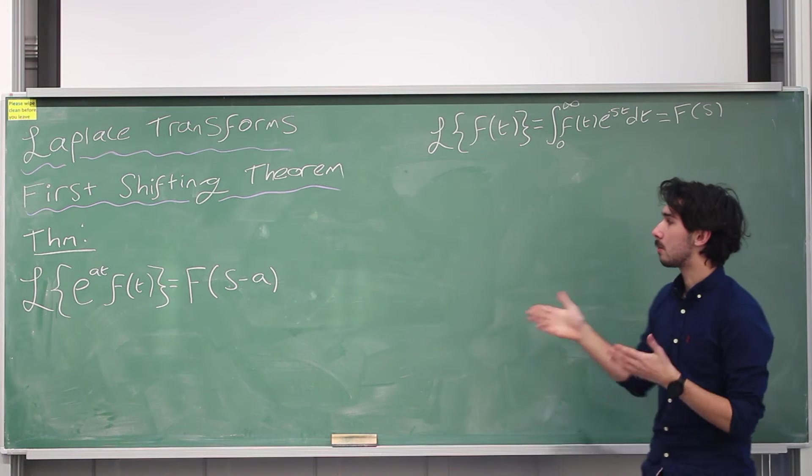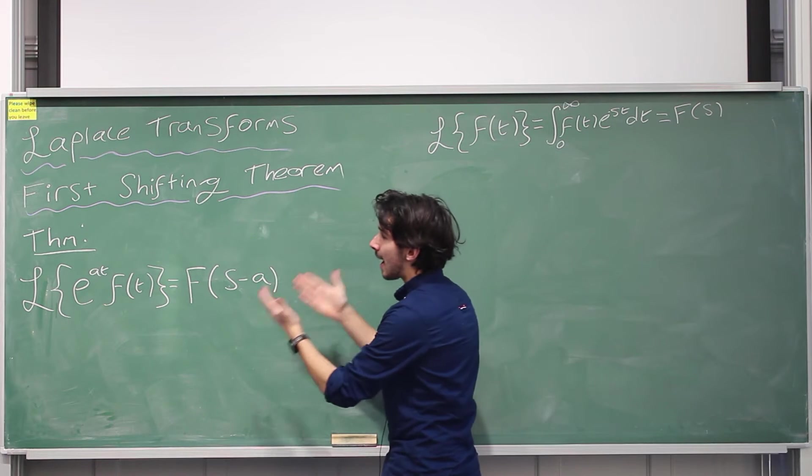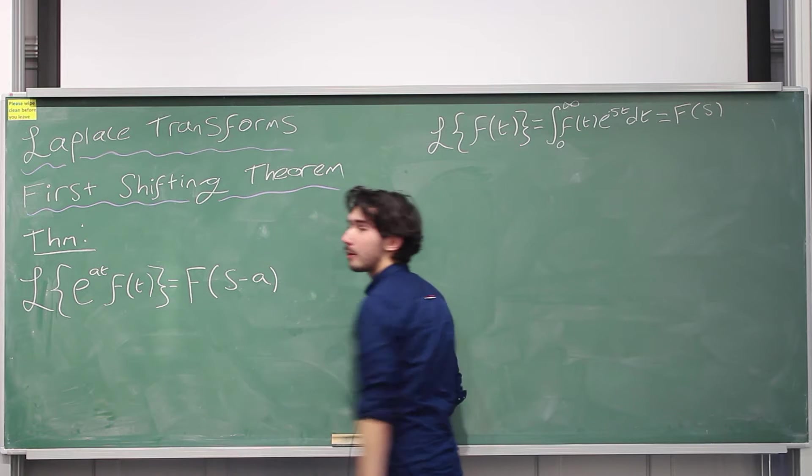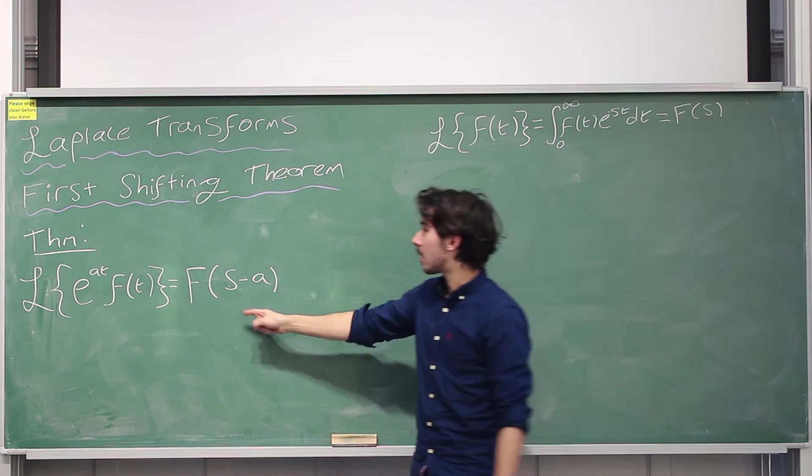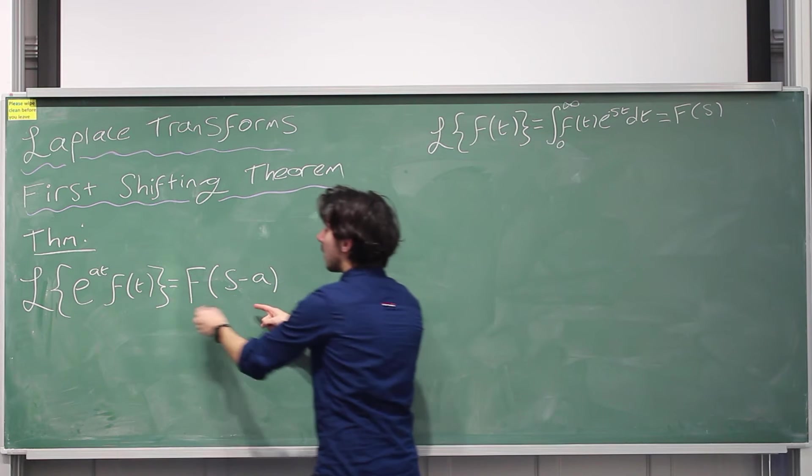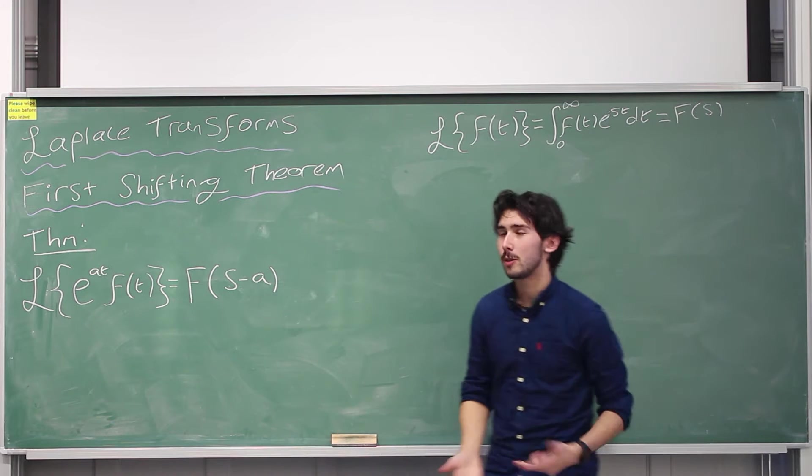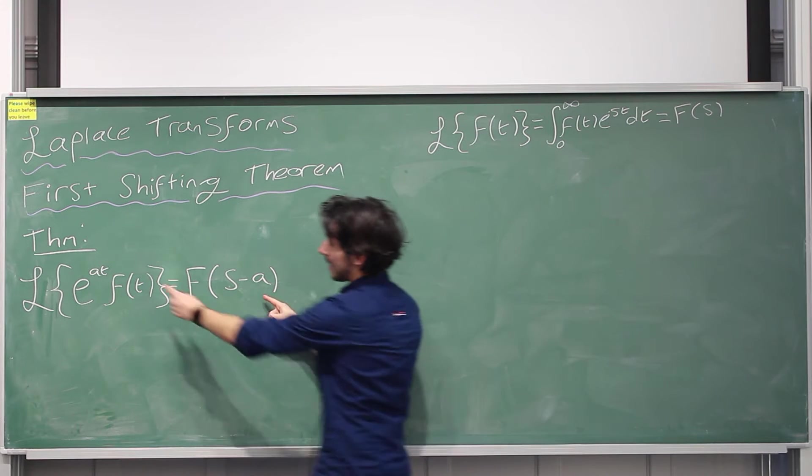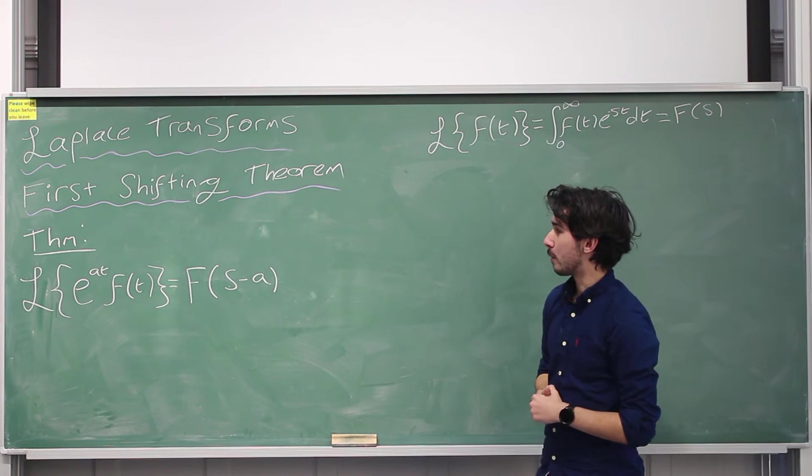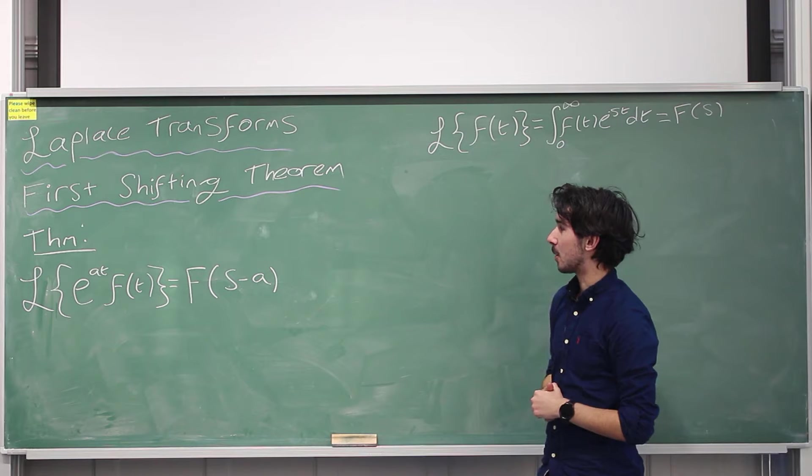It's very simple, all it says is that the Laplace transform of e to the at times your little f of t function is just the Laplace transform of f of t on its own but shifted, that's why it's called the first shifting theorem, by the factor a which is the exponential component there of e to the at, it's the constant.